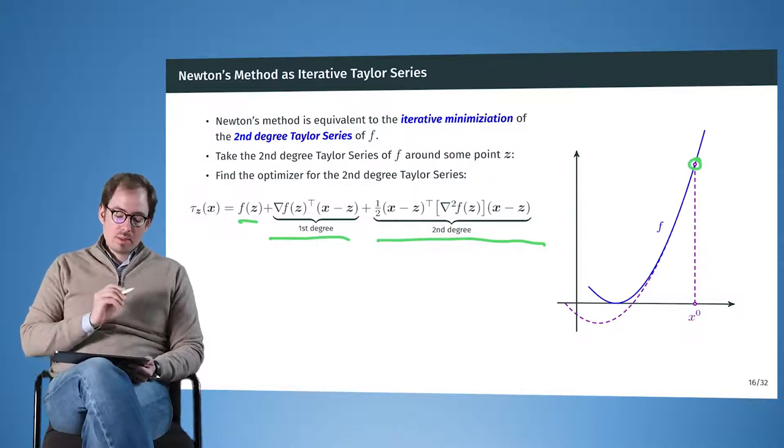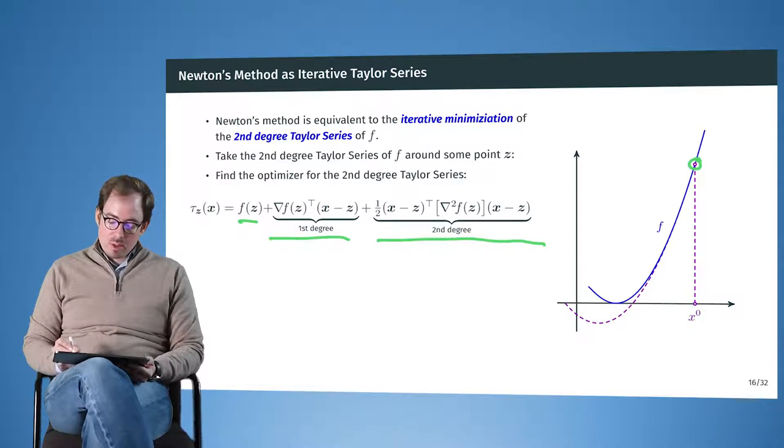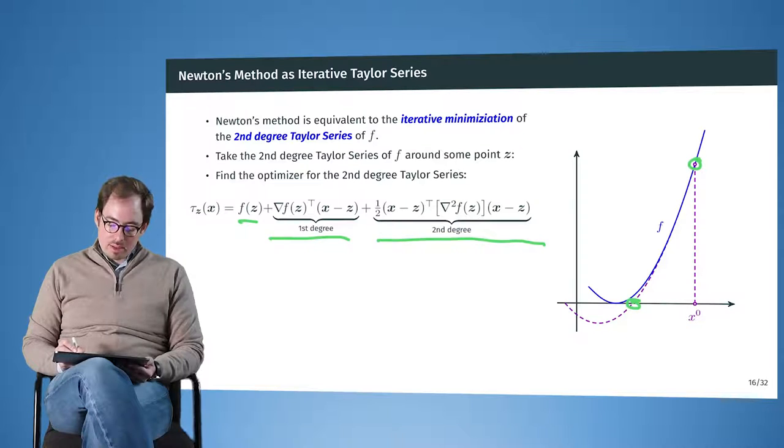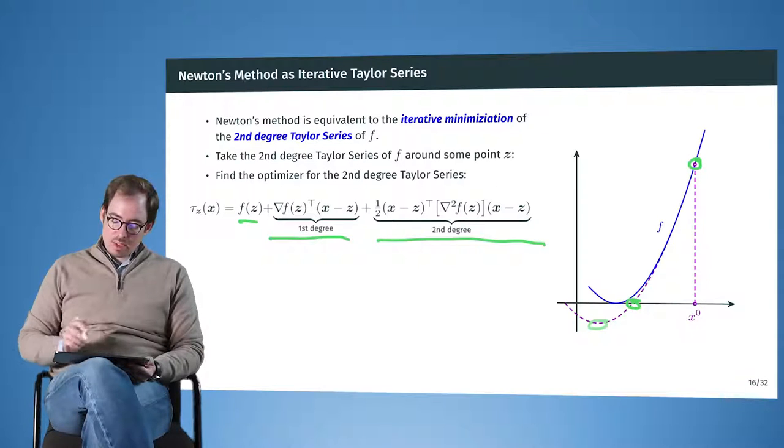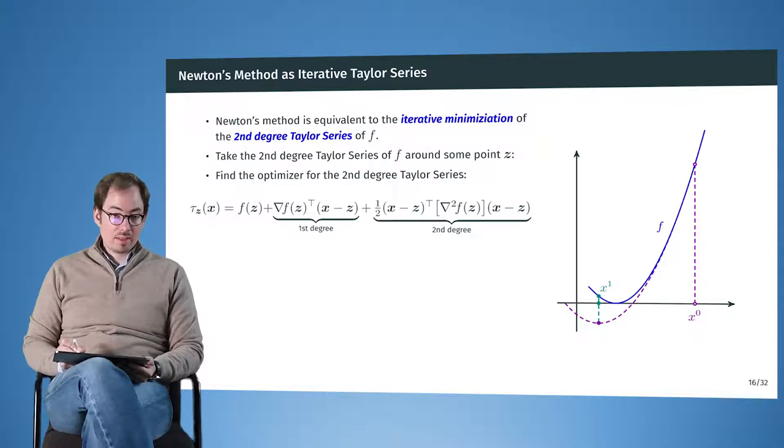And what the Newton method does here is in every location to find, because we are now no longer trying to find where this is intersecting with the abscissa, we are looking now for the location where the gradient of the Taylor expansion becomes zero.